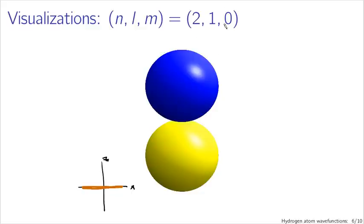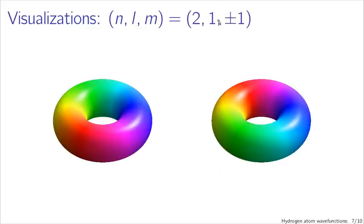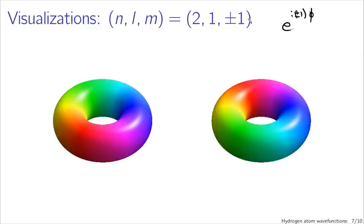If you look at the case where m is plus or minus one, we get a slightly different shape. This may look unfamiliar if you're used to pictures drawn by chemists. Chemists don't like to deal with complex numbers, which is understandable — they're dealing with real things. But in physics we deal with wave functions expressed in terms of complex spherical harmonics. Here our Y_lm has something like e^(±i·phi), so we're looking at the phase of the wave function fluctuating as we move around in the phi direction.